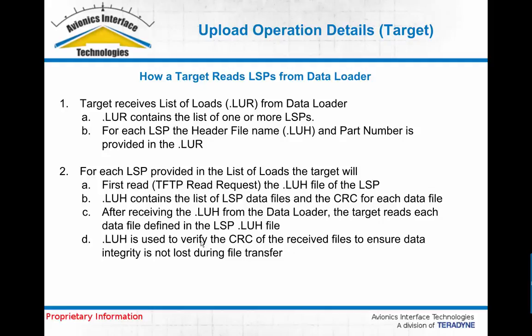Once that LUH file is received, the target can open it — it contains a list of all the individual files and file part numbers in that LSP. The target will use that to sequentially do read requests for each of the data and support files that are part of the LSP. The LUH file also contains the file length and the CRC for each load file, so once each file is received, the target can check the length and CRC against what was in the load header file to ensure integrity and that nothing was corrupted during the file transfer.